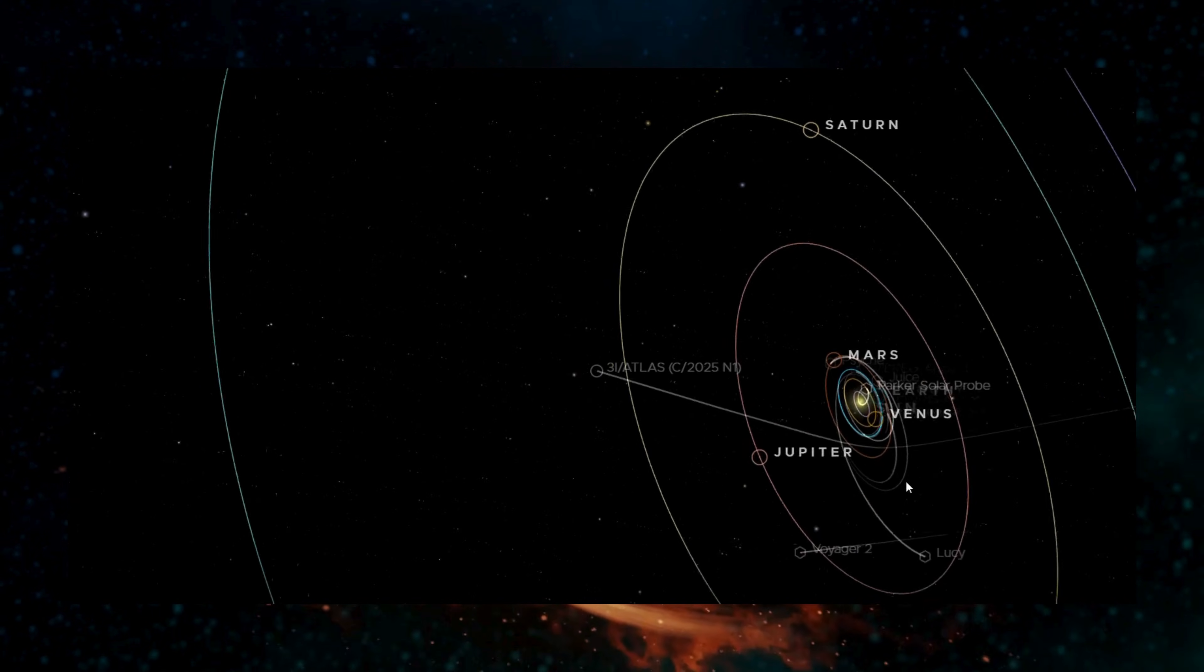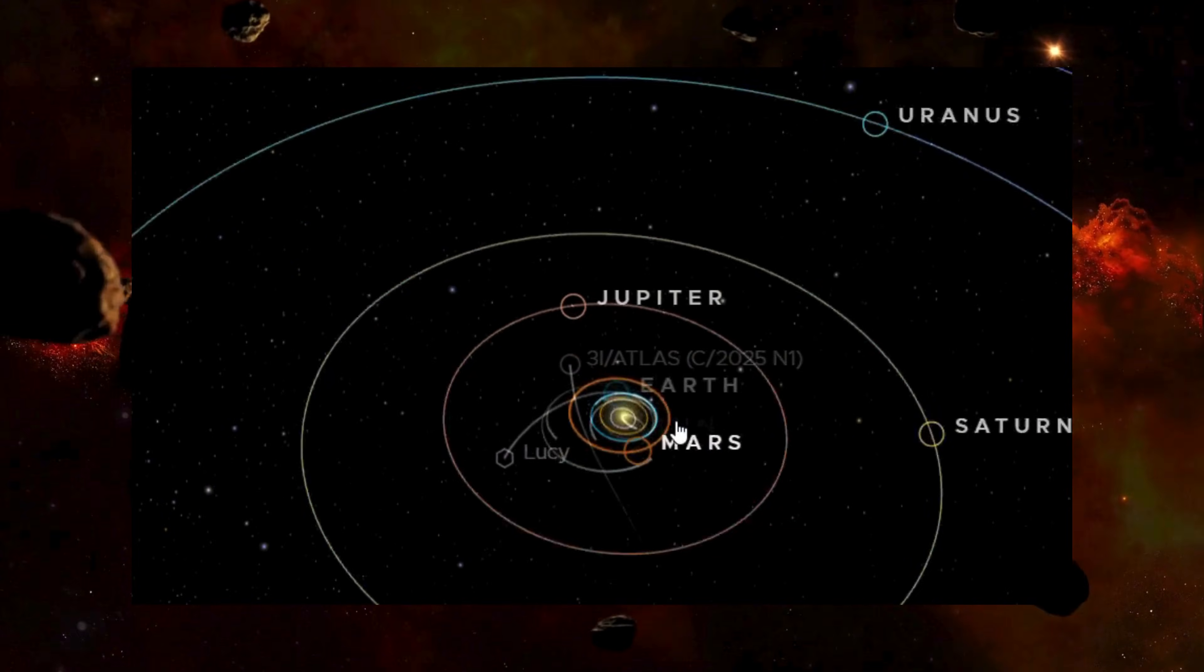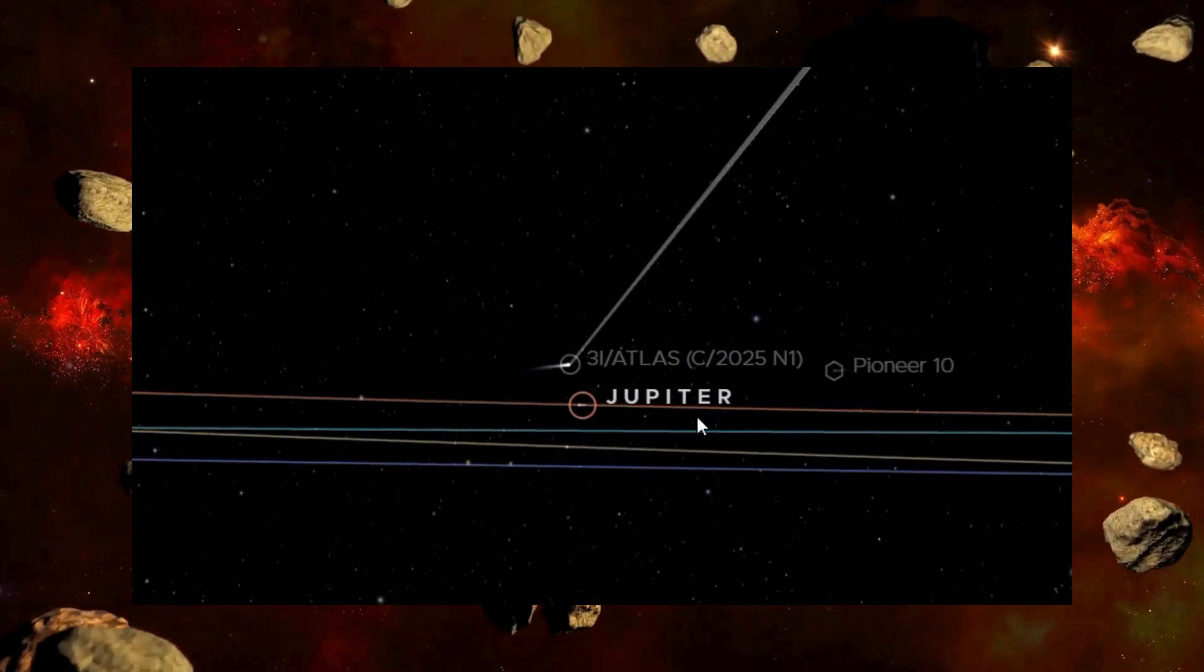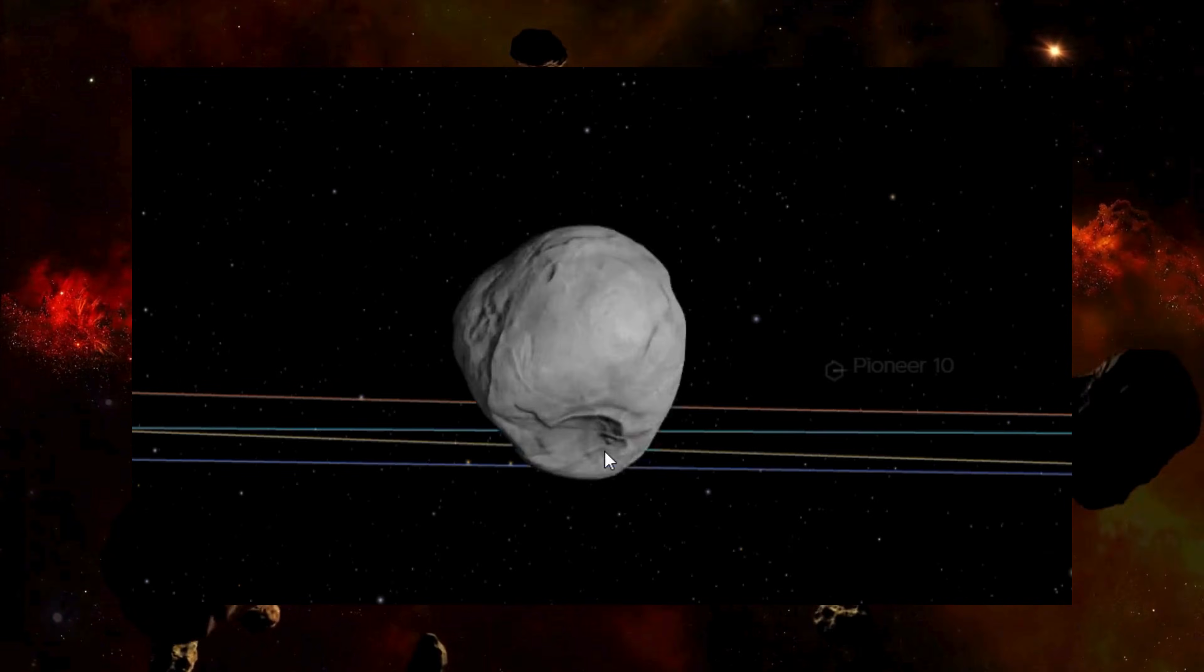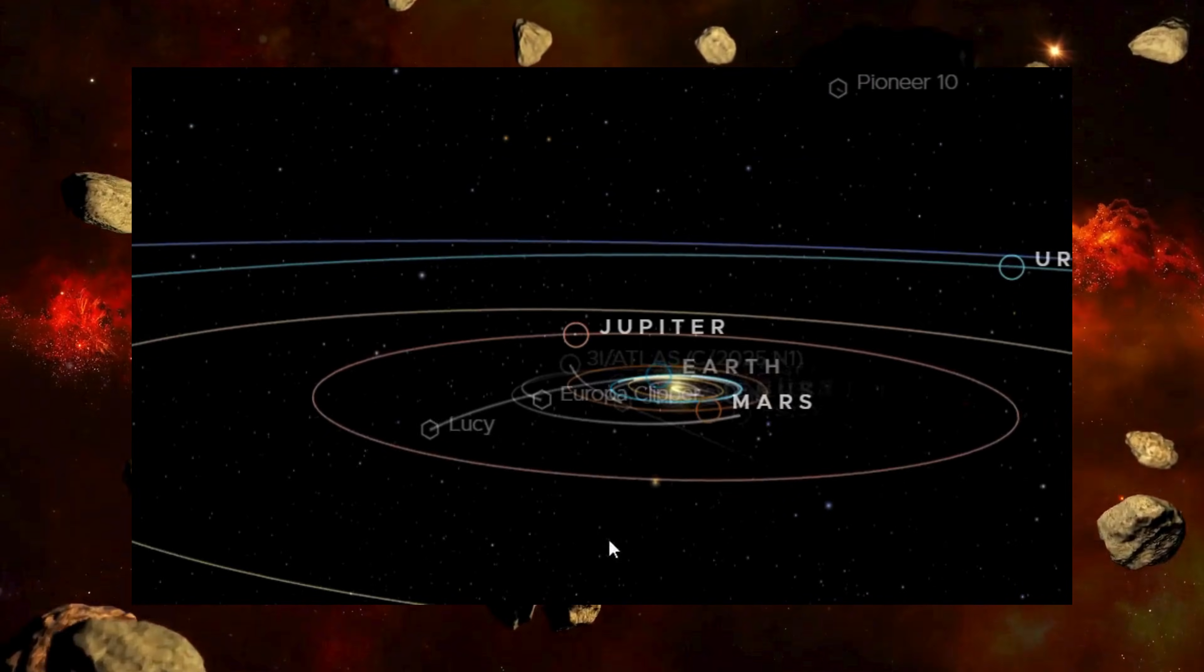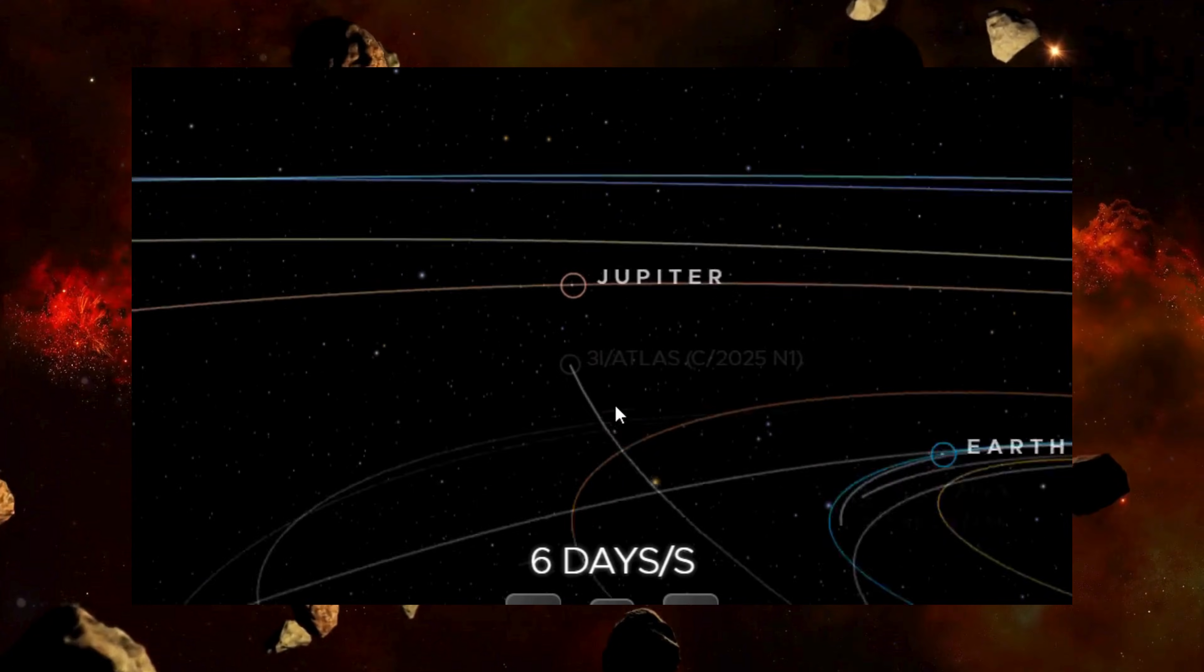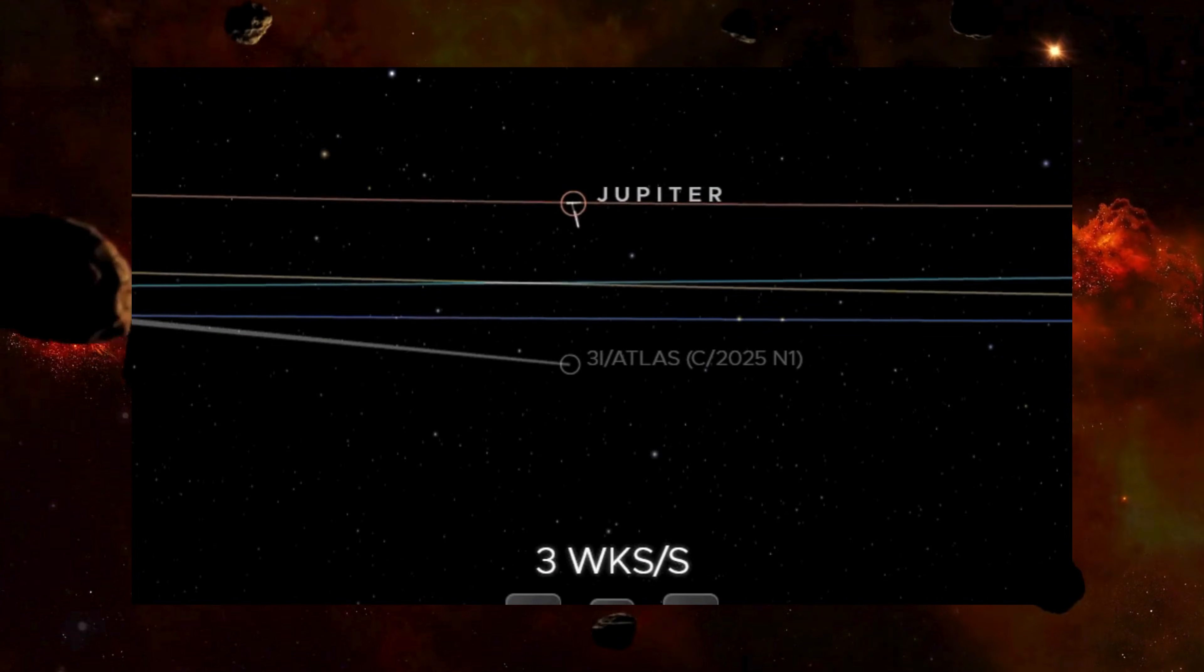What makes this situation especially difficult is that 3i/ATLAS is an interstellar object. We've never studied a visitor from another star system in this level of detail before. Many of the assumptions we rely on are based entirely on comets formed within our own solar system. But this object formed somewhere else. Its chemistry may be different. Its internal structure may be different. Its thermal history could span billions of years under conditions we don't fully understand.